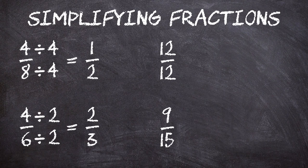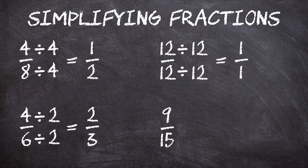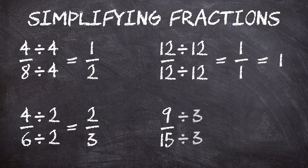Four-sixths is the same as two-thirds. For the third fraction, twelve over twelve, we can divide both top and bottom by twelve, which gives us one over one. One divided by one is just one. That is, if we have a twelve-sliced pizza and twelve slices remain, we have exactly one pizza left. And for the last one, nine over fifteen — both the top and bottom can be evenly divided by three, giving us three over five, or three-fifths. Nine-fifteenths is the same as three-fifths.